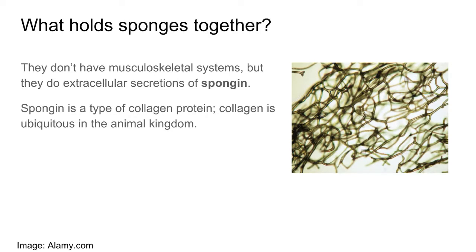Sponges have a mechanism to hold their cells together called spongin, which is a collagen protein — a very ubiquitous protein found throughout the animal kingdom. Collagen is formed by cells making extracellular secretions: ribosomes secrete the necessary proteins, which travel to excretory vesicles, those vesicles fuse with the phospholipid bilayer, and finally deposit the spongin in an orderly fashion outside the cells to form these structures.